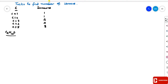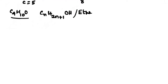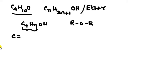Let us see one example: C₄H₁₀O. This compound has the general formula of alcohol, that is CₙH₂ₙ₊₁OH, and also ether (R-O-R). For alcohols of the formula C₄H₉OH, the carbon number is 4, so the number of alcohol isomers is 4.